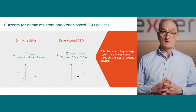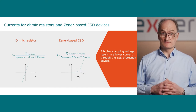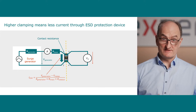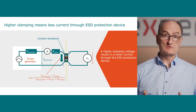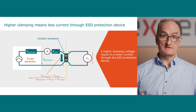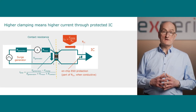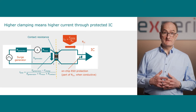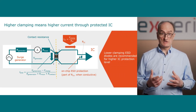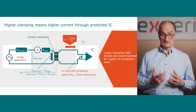This clamping voltage will reduce the current through the protection device. For a given generator voltage, less current will flow through the device. If we extend the device under test by the protected IC, the higher clamping voltage will increase the surge current flowing through the internal resistance of the protected IC. A higher clamping ESD protection device will see a lower surge current. However, this means that the surge current flowing through the internal resistance of the IC will increase.